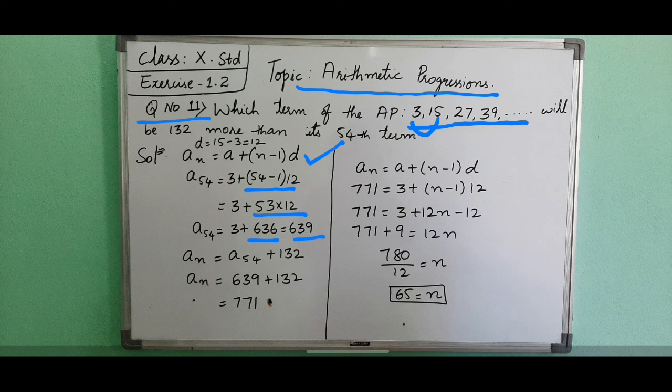So a54 is 639. But what we need to find? In a54, we have to add 132, then we will get the required number for which we need to find where it is occurring. an is 639 plus 132, it is 771. So we have to find where this 771 will come after this 5th term, 7th term, 8th term - which term will be 771.